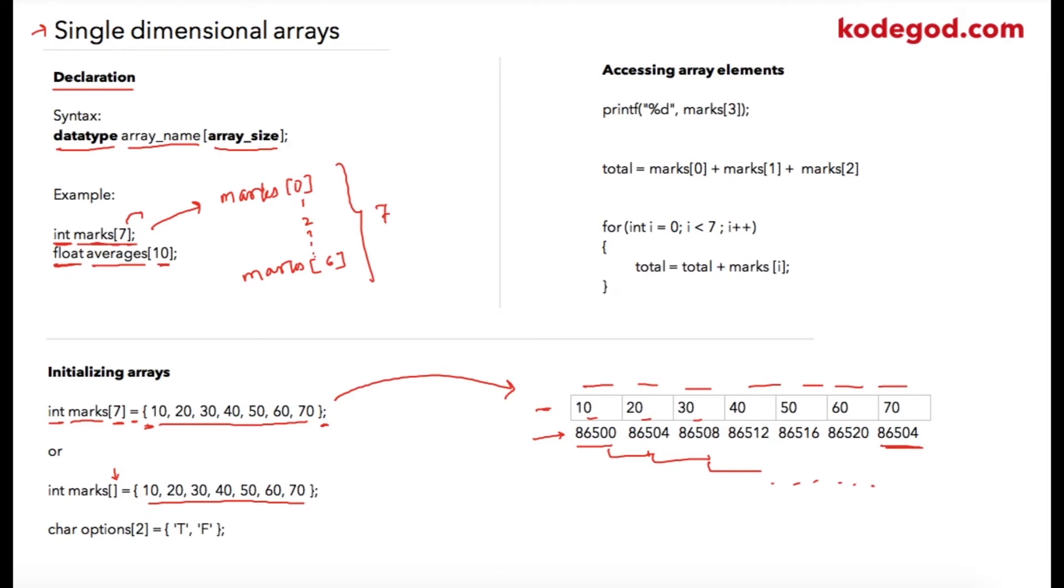Here is another example where I have declared a character array with data size as 2, naming it as options, and I am initializing it with T and F, which is short form for true and false. Also notice that I have specified these values inside of single quotes because those are character values.